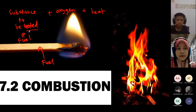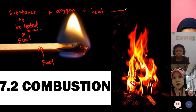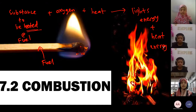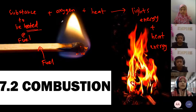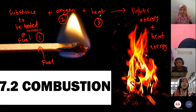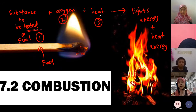Heat, function dia untuk panaskan fuel. Ada heat, so it will produce light energy and also heat energy. So this is a chemical reaction — awak baru je belajar kan, physical reaction and also chemical reaction. So yang ni adalah reaction between tiga substance: fuel, oxygen, and heat. Bila ada tiga-tiga condition ni, it will produce a combustion process — combustion reaction — which is yang kita nampak adalah light energy and also heat energy.